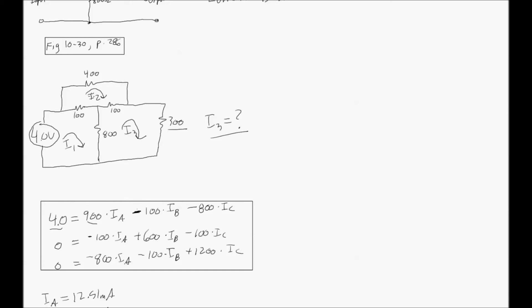Minus 100 IB, because IB is shared with the I2 loop. Minus 800 IC, because 800 is the resistor shared by the IC. In this diagram,